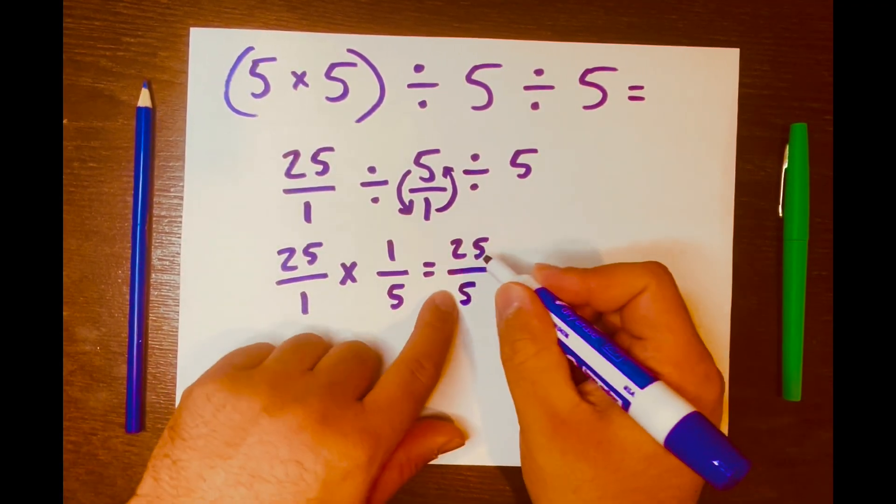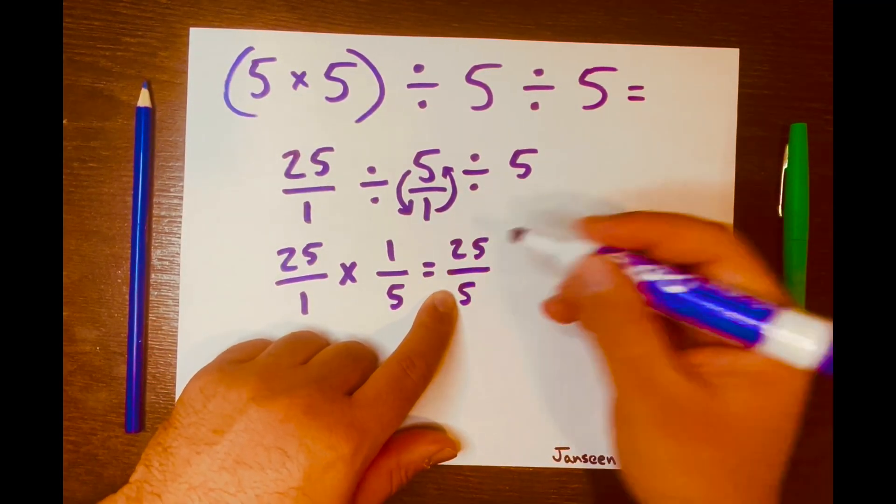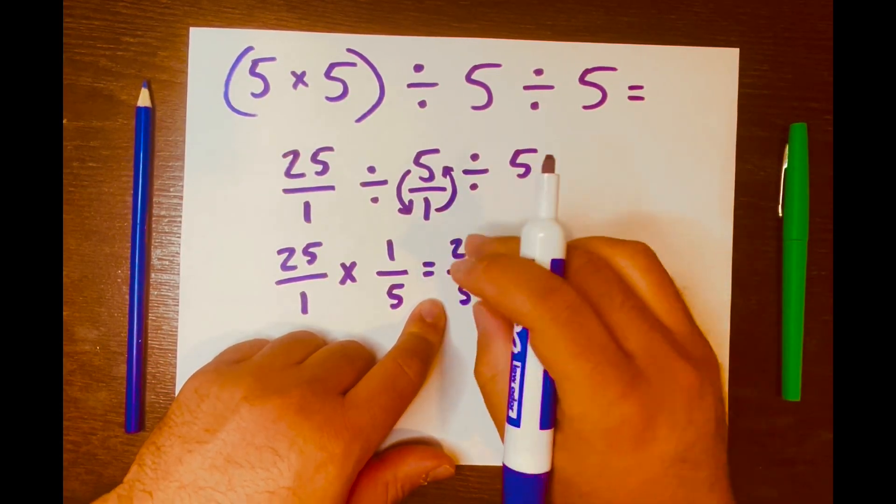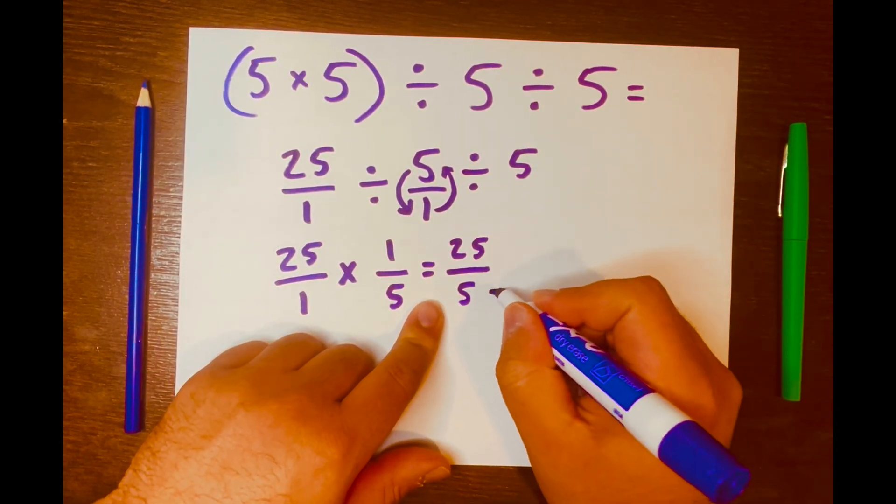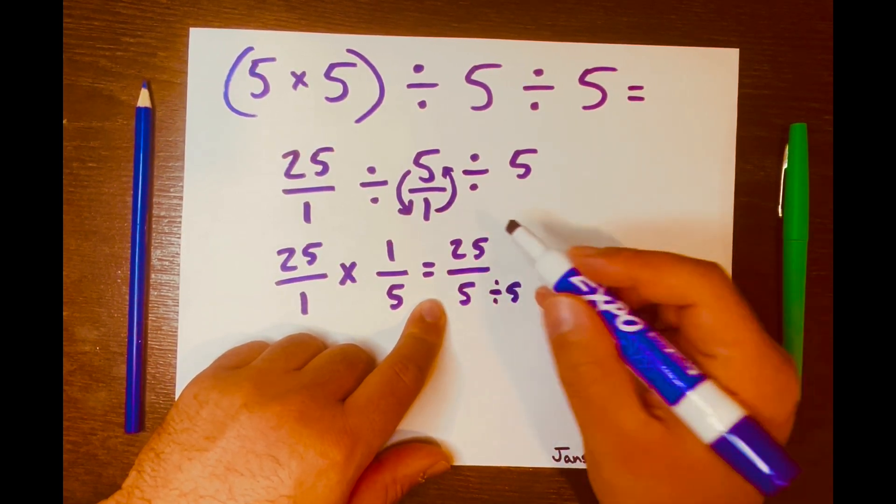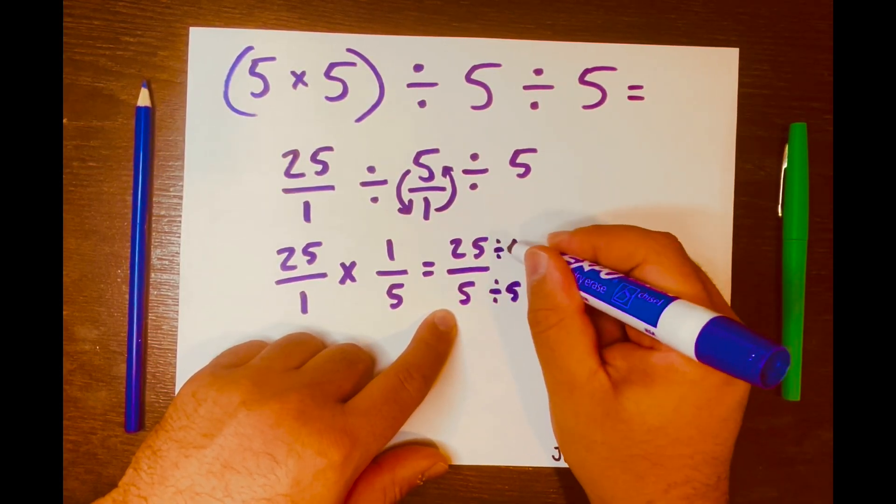So this can be broken down or simplified further. So 25 over 5 can be simplified further. So let's divide it by 5 because the top number 25 is an odd number and 5 is an odd number, so I just divide it by 5. So 25 divided by 5 is 5.